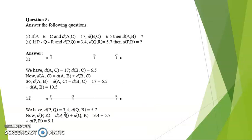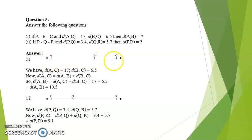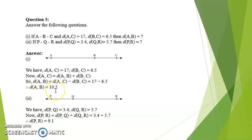If A dash B dash C, distance AC is 17 and BC is 6.5, how much is AB? AB would be AC minus BC — that is 17 minus 6.5 — so distance AB is equal to 10.5.